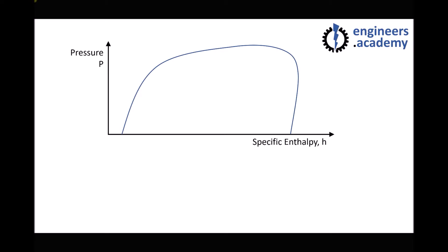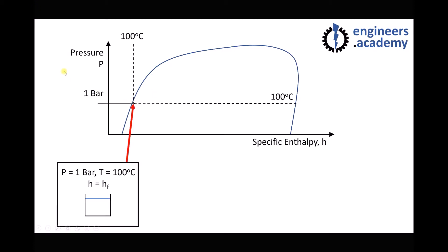Now let's take a look at a simplified view of the pressure enthalpy diagram so we can understand what's happening in the wet steam region. We're going to use a pressure of 1 bar or 1 atmosphere — as mentioned, water boils at 100 degrees C at this pressure. The first point to identify on this curve is on the left-hand side: at 1 bar and 100 degrees C, the enthalpy H is assigned the value H subscript F, or enthalpy of fluid. This represents a container of water at 100 degrees C or boiling point.